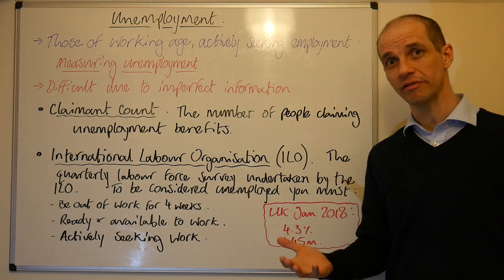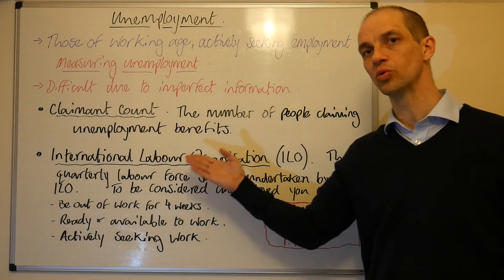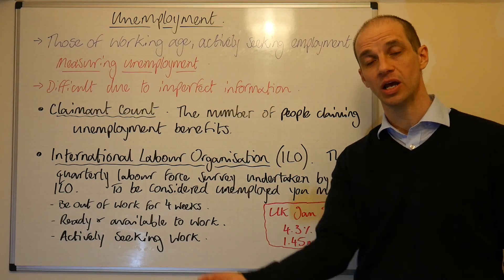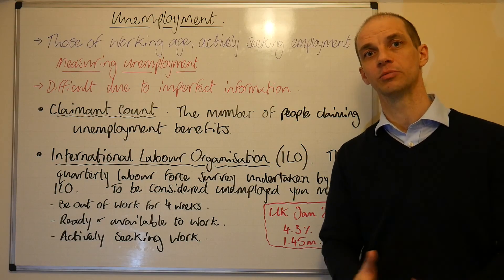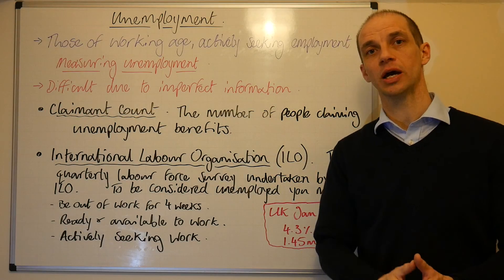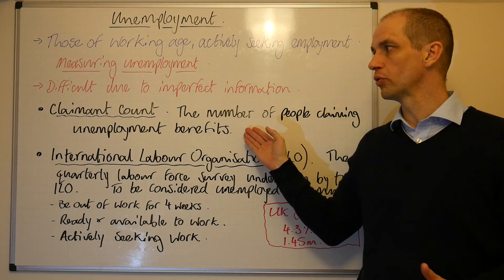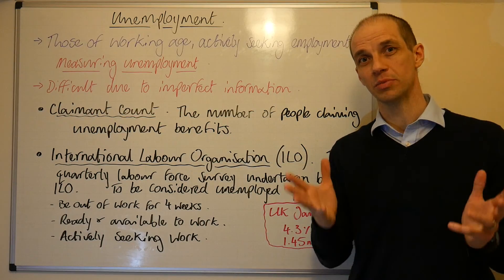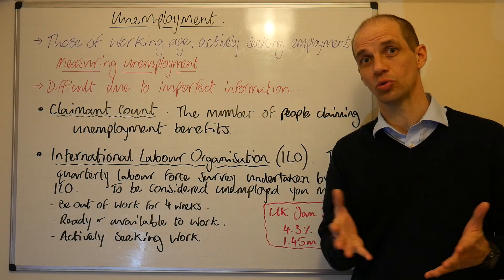That's a straightforward definition. Further to this, we also have the International Labour Organisation measure of unemployment. This is the actual figure that you will see in a news story about unemployment — we use this measure, as do all other EU countries. The reason for this is that the claimant count can be manipulated politically to make it look better than it actually is.